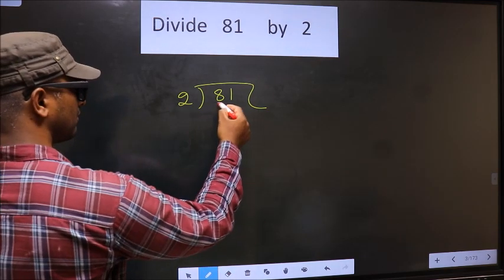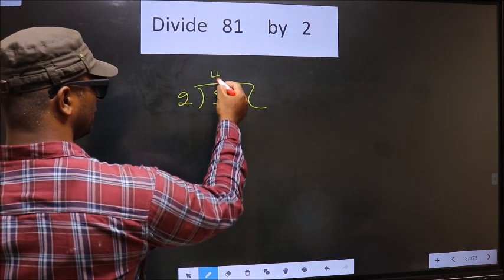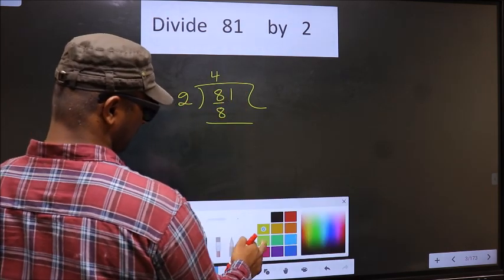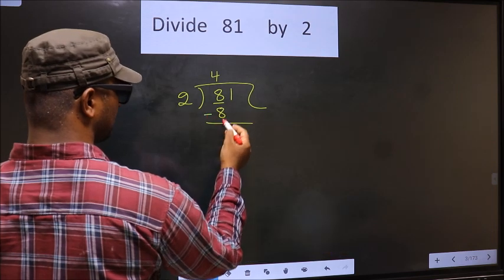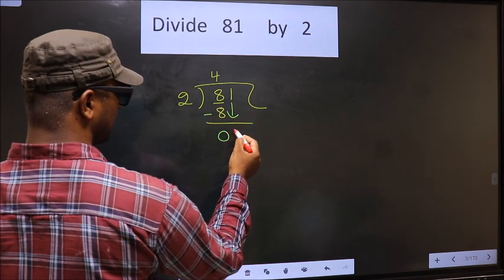Now here we have 8. When do we get 8 in 2 table? 2 4s, 8. Now we subtract. 8-8, 0. Now we bring the beside number down that is 1.